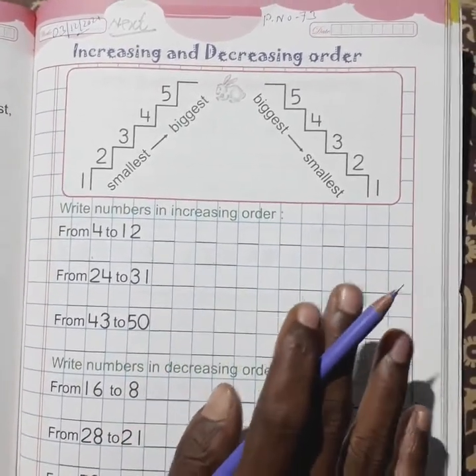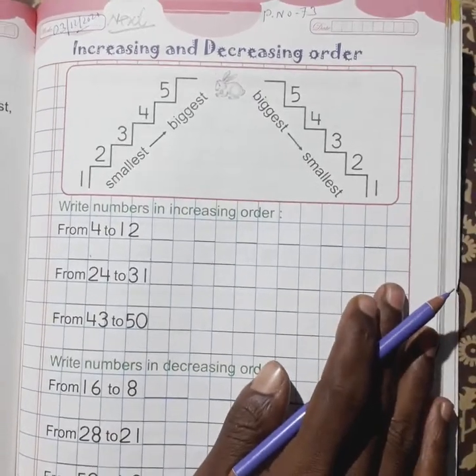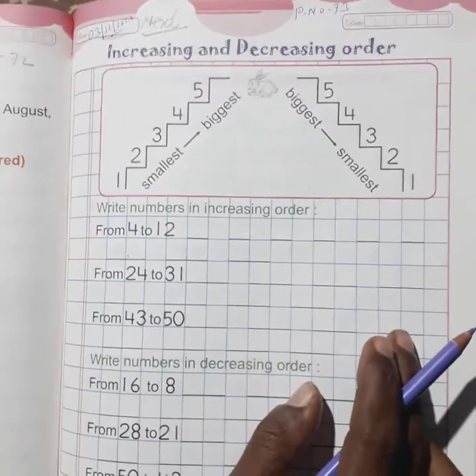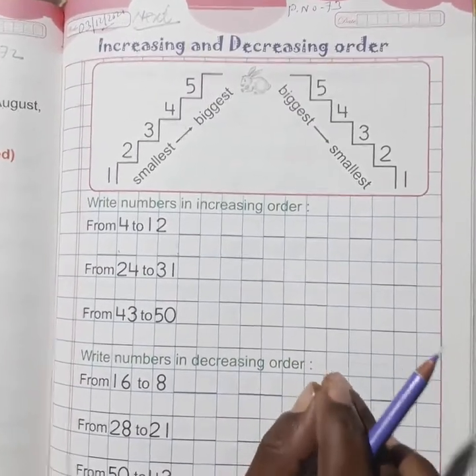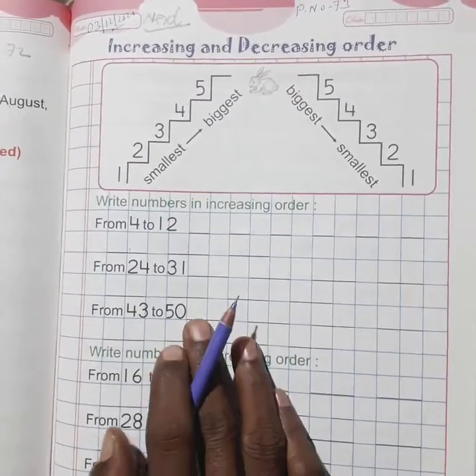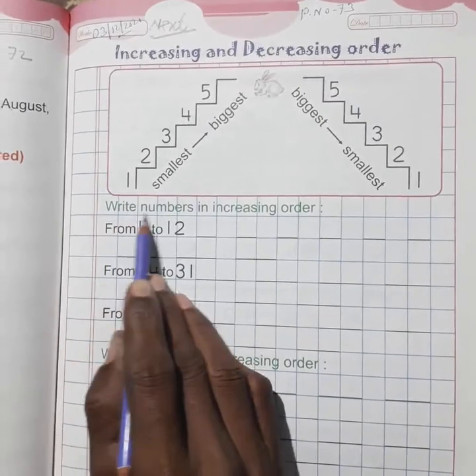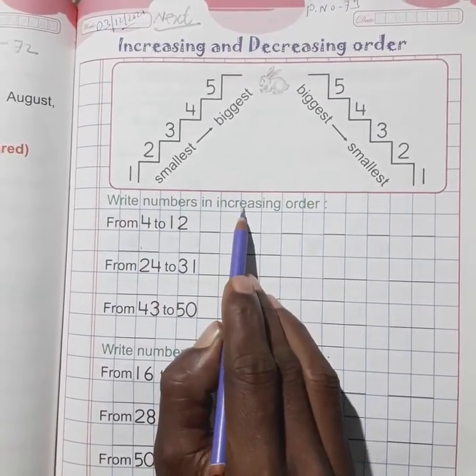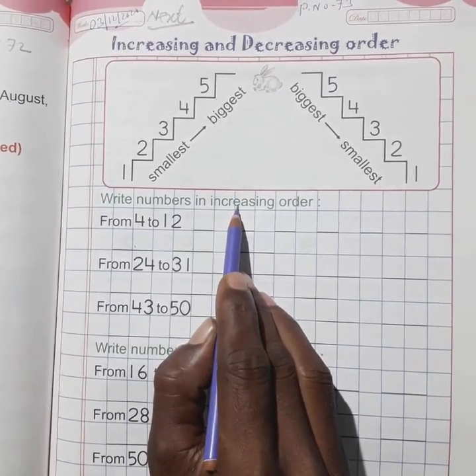Decreasing order means biggest number to smallest number, that means 5, 4, 3, 2, 1. Here, write numbers in increasing order. Increasing order is also called ascending order.